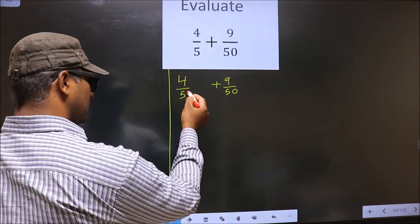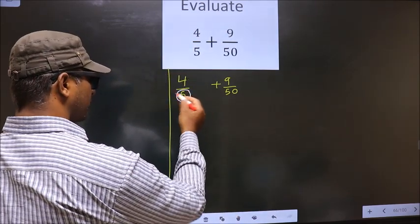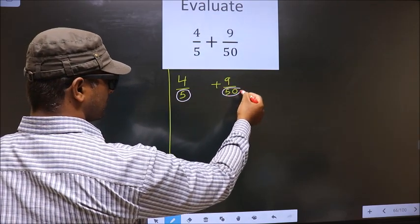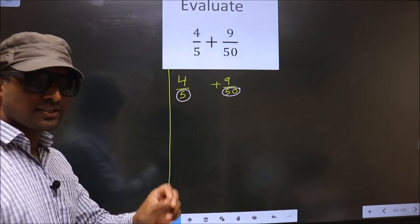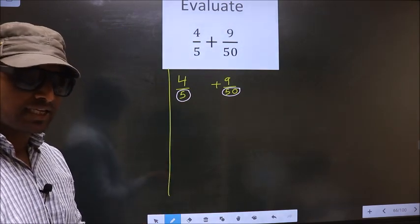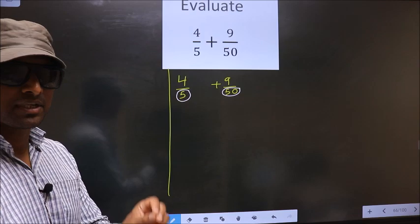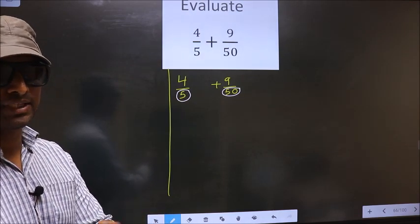In this fraction the denominator is 5. Here the denominator is 50. The denominators are not same. Whenever the denominators are not same we should take LCM of them.